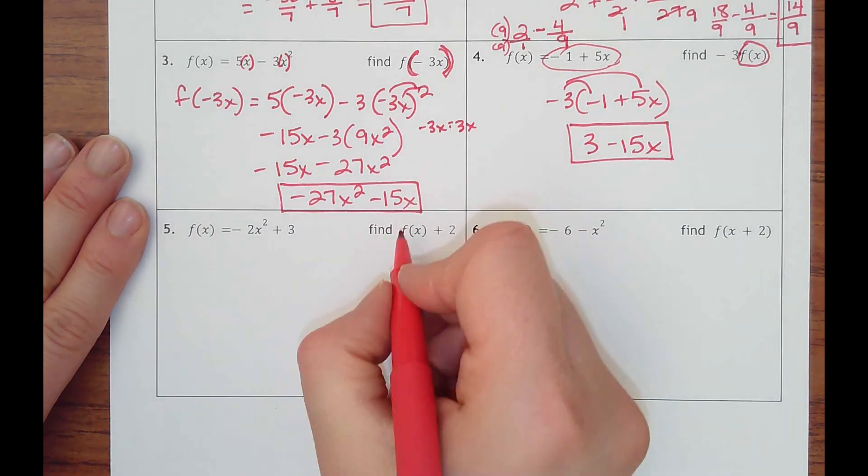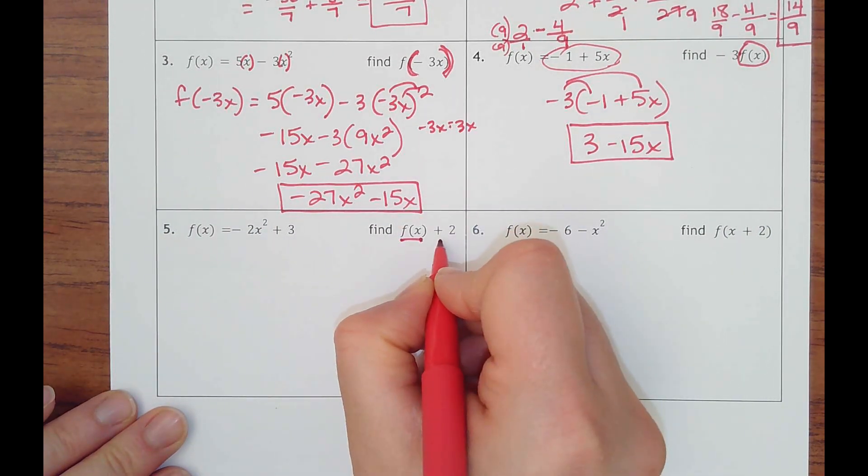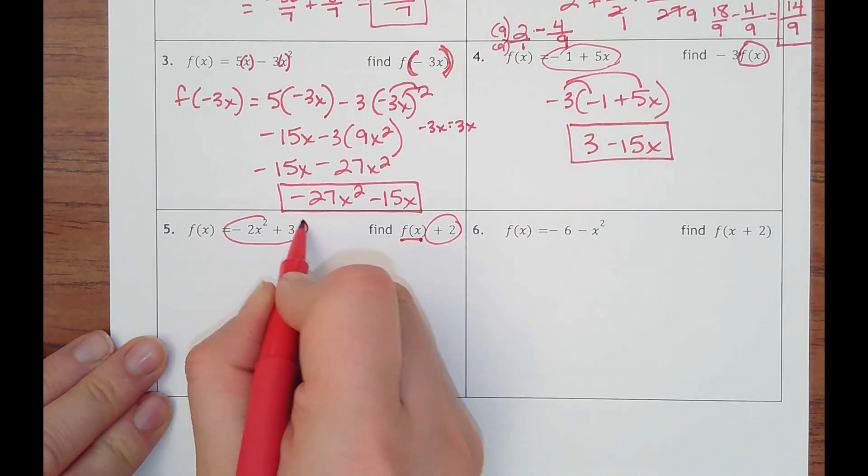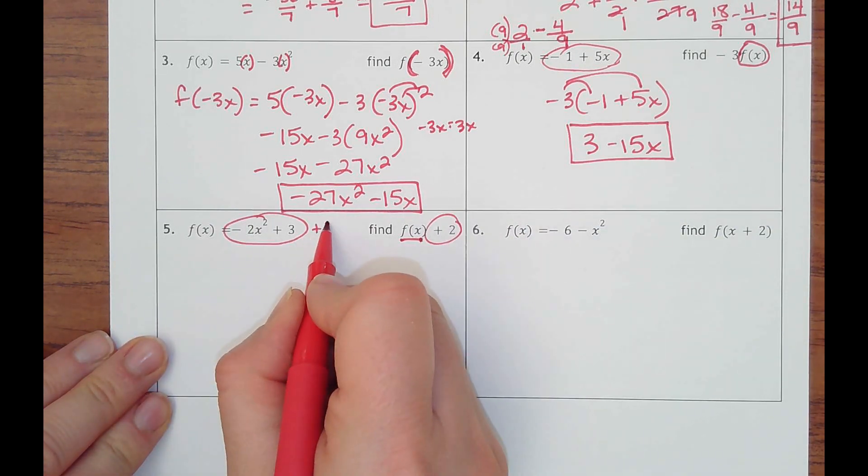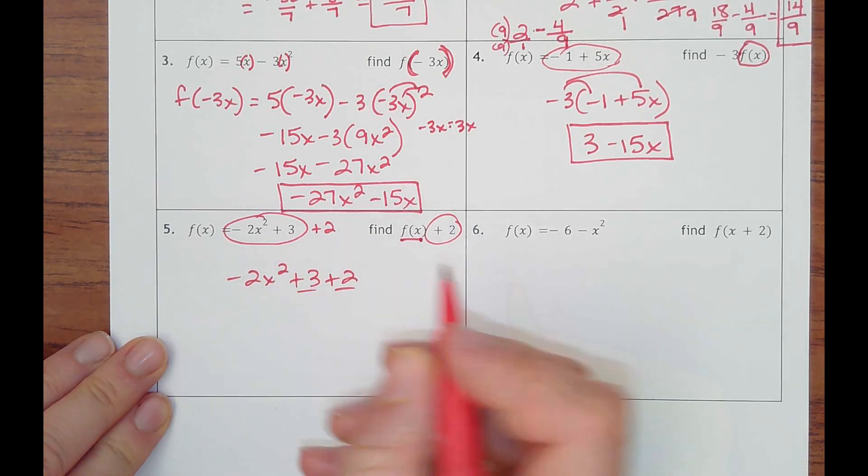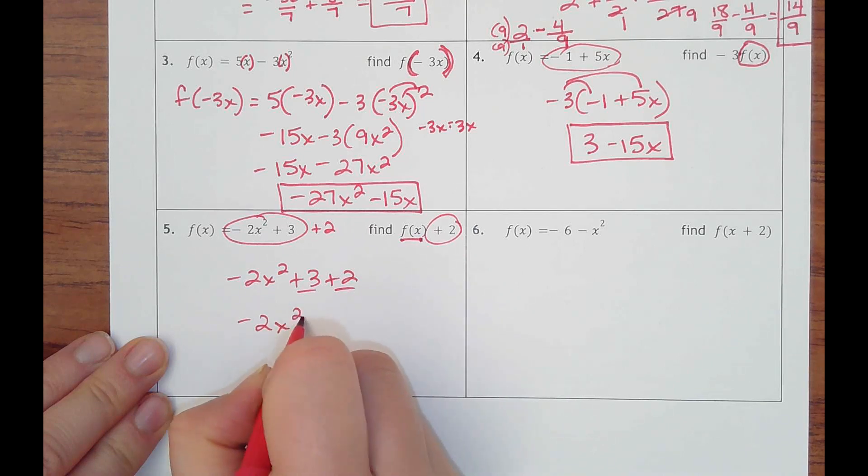And then number five, kind of the same thing where you have your normal function, and then you're just adding two at the end. So I'm going to take my normal function, add two at the end. And it's simply combining like terms would be negative two x squared plus five.